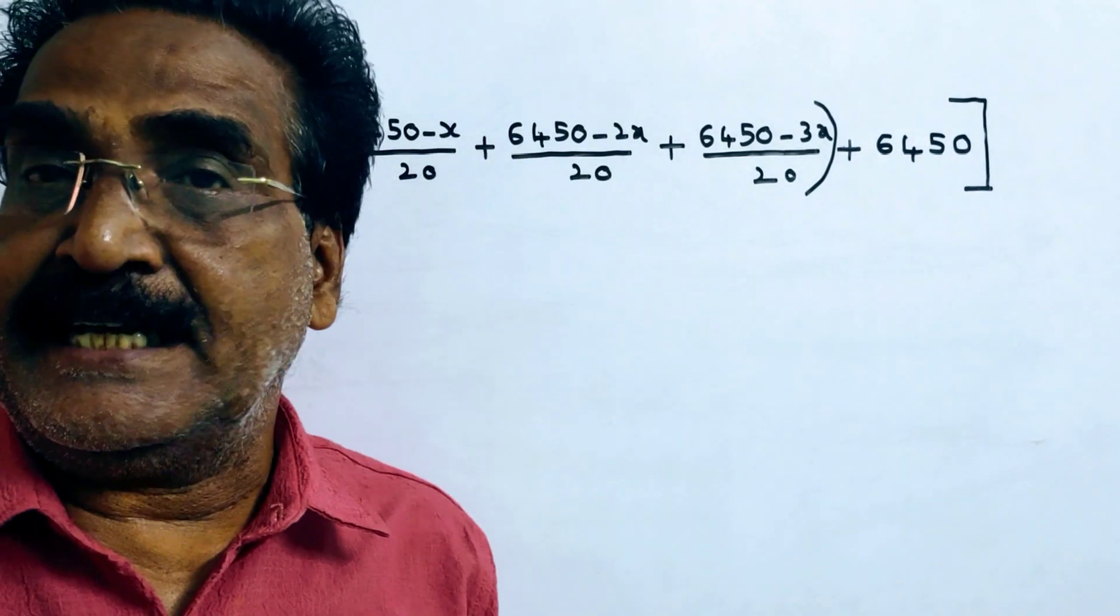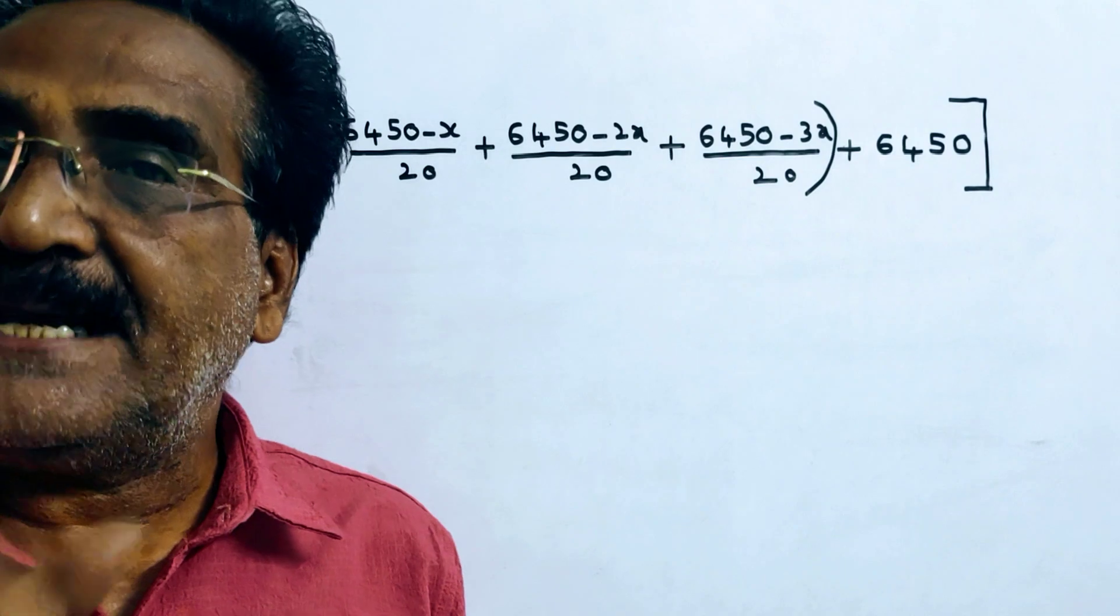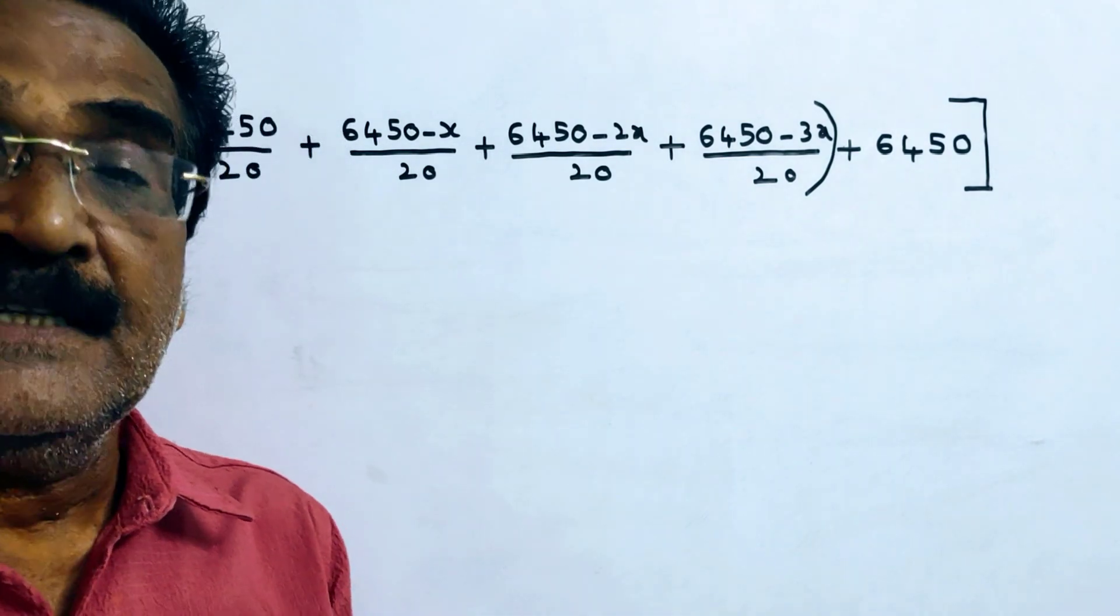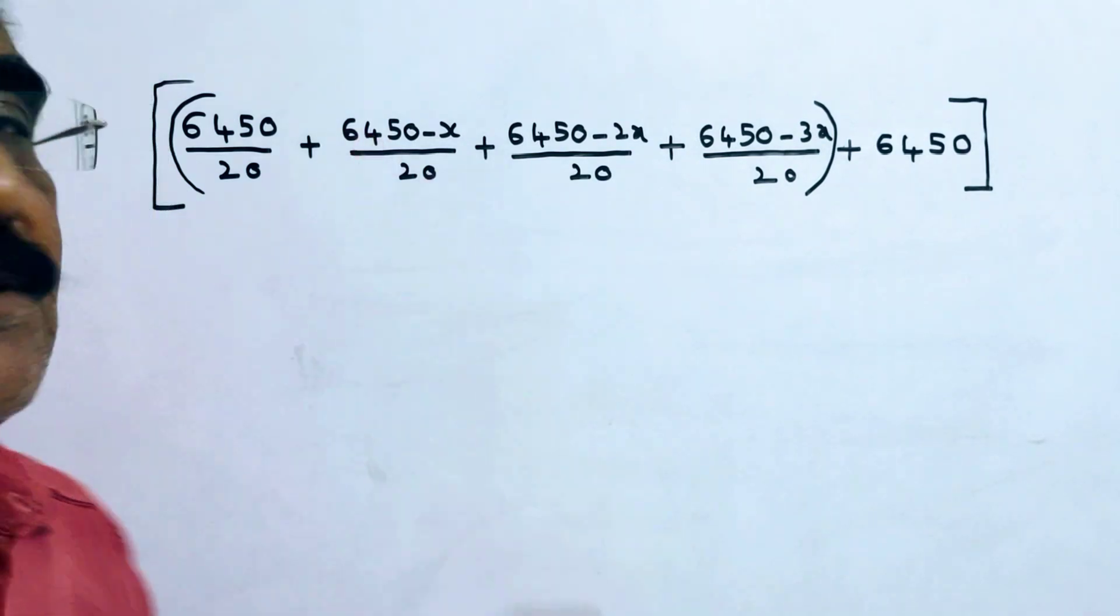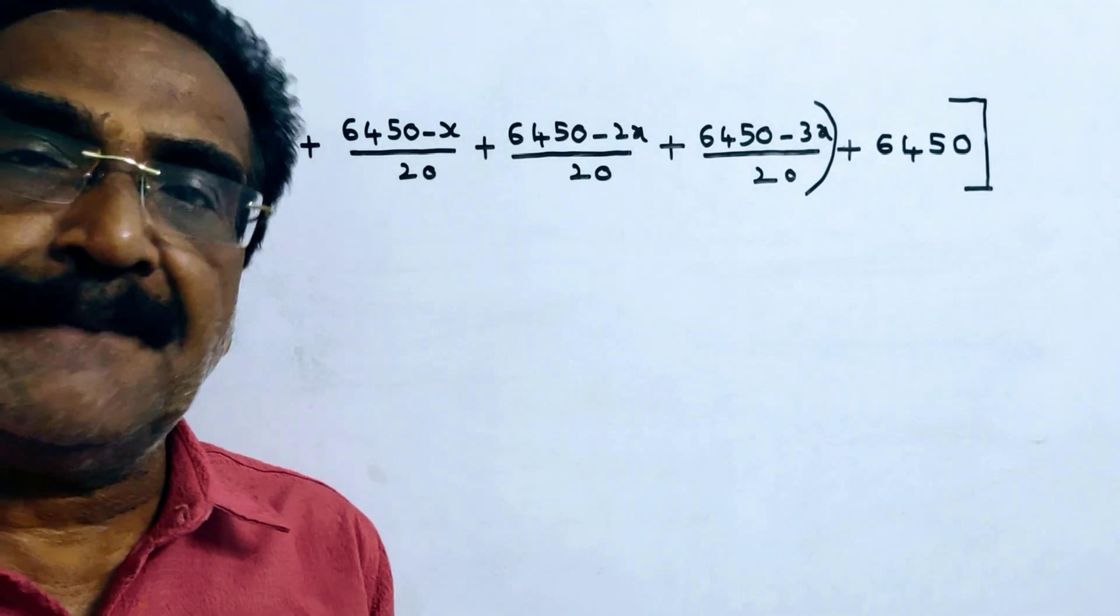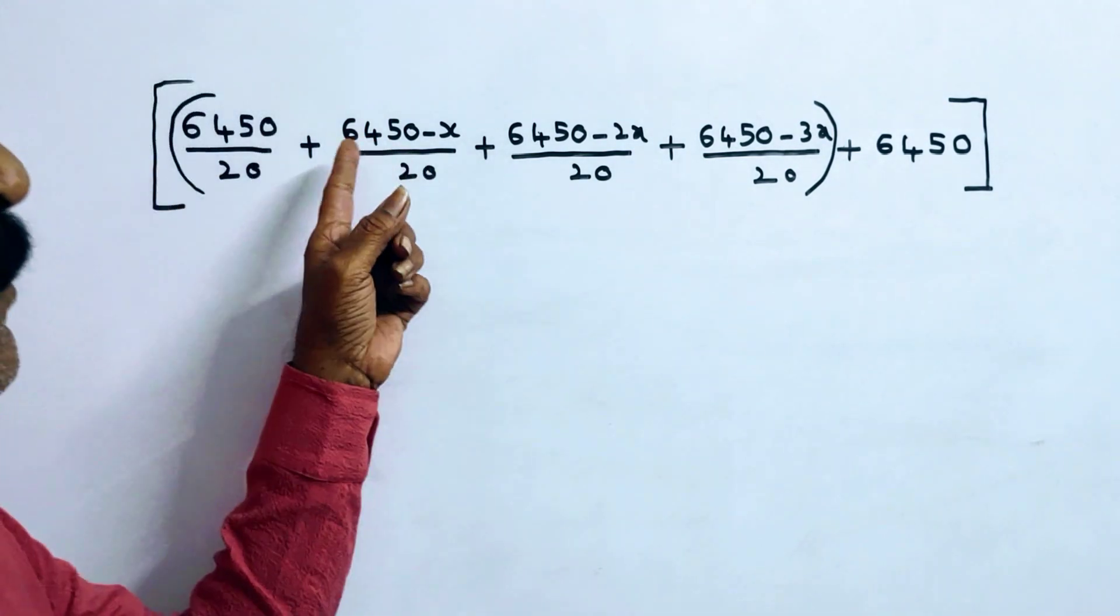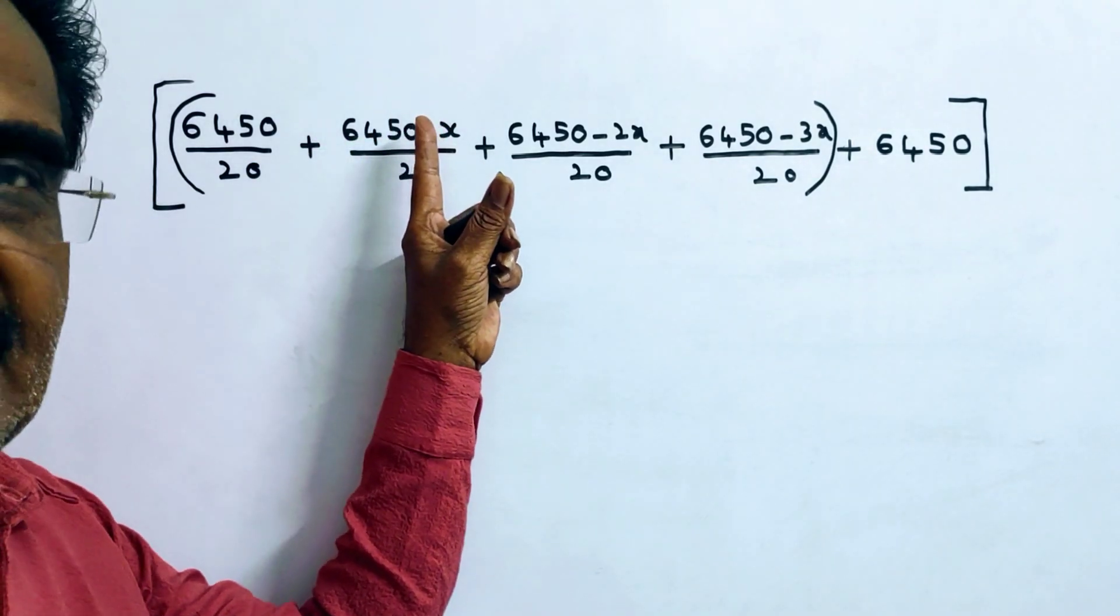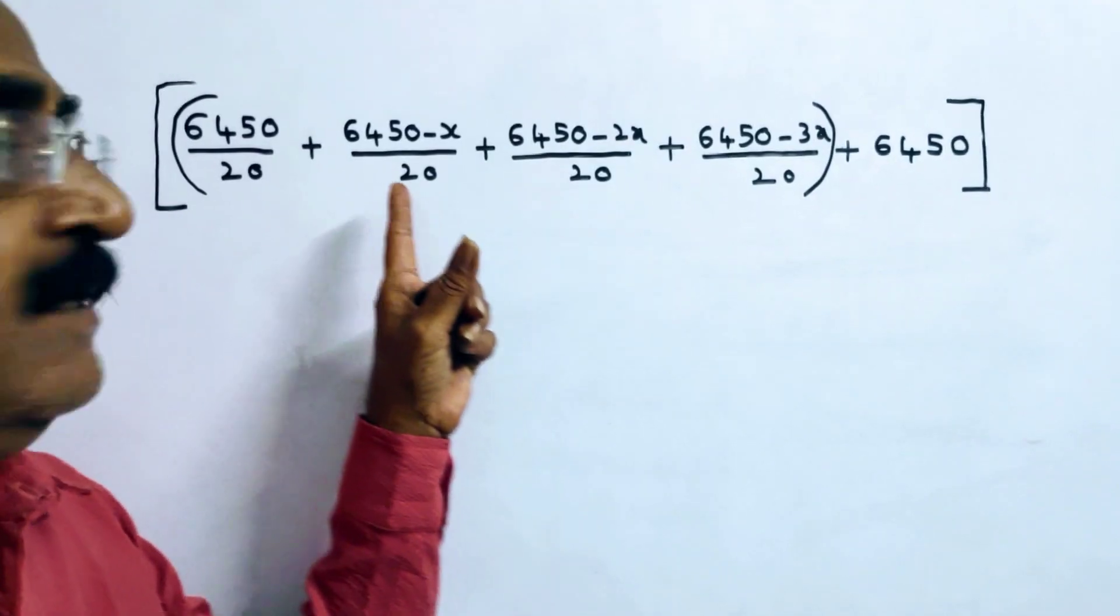For the second year, after one year he pays the first installment X. So for the second year, the principal will be Rs. 6450 minus X because he paid the first installment X. Therefore, the interest for the second year will be 6450 minus X by 20.